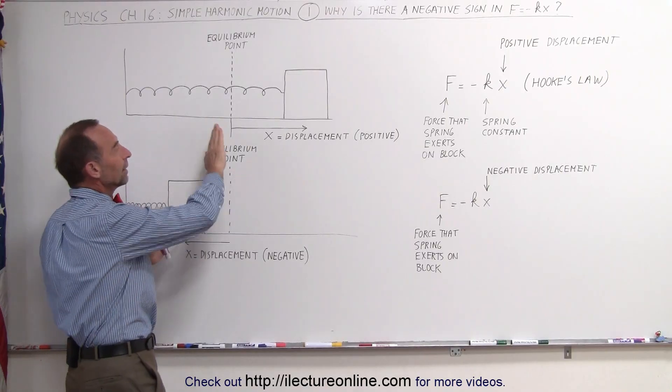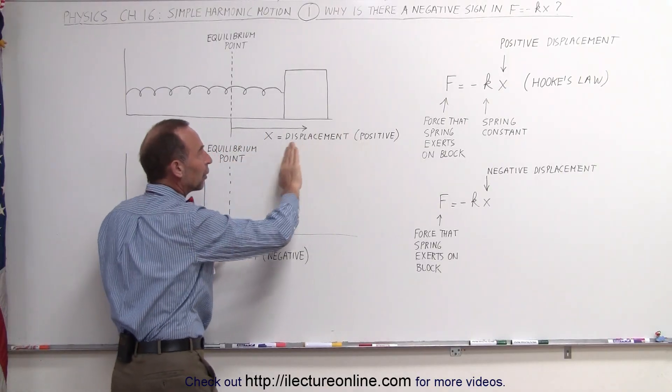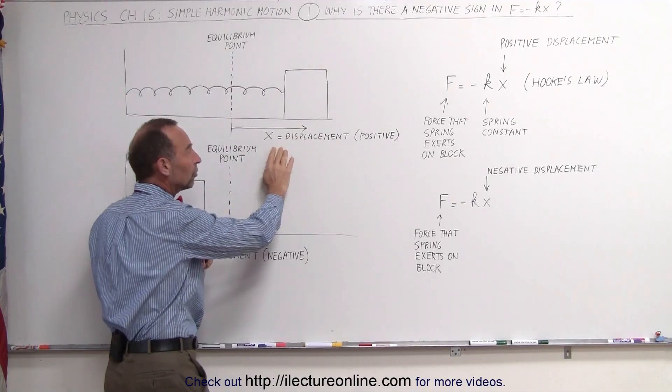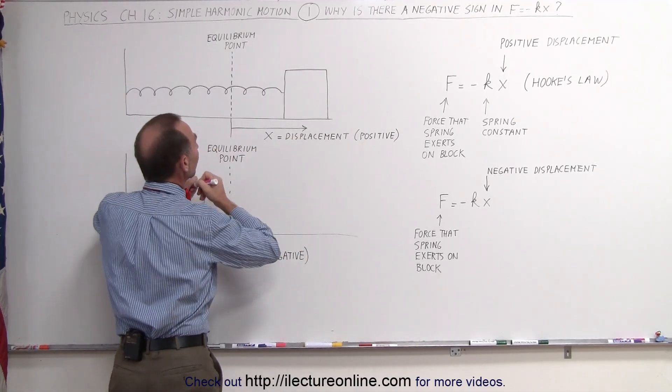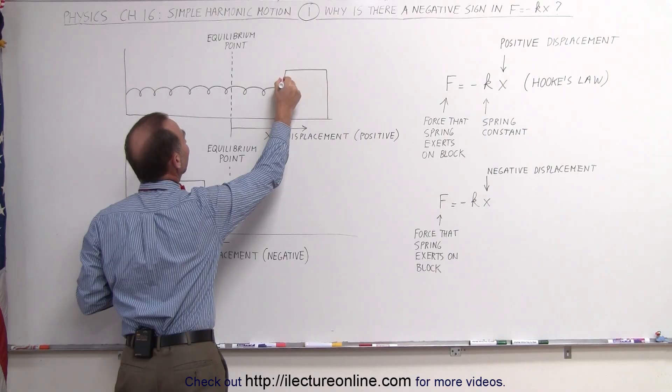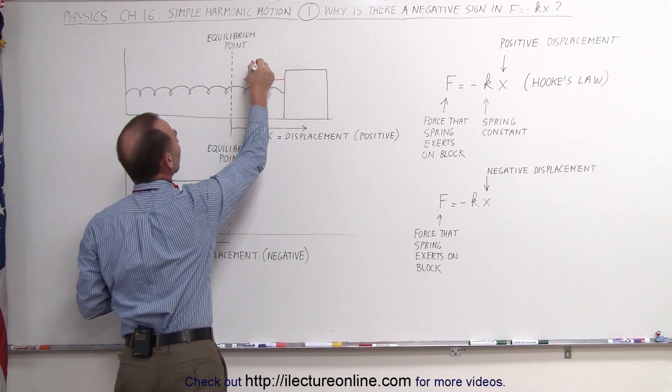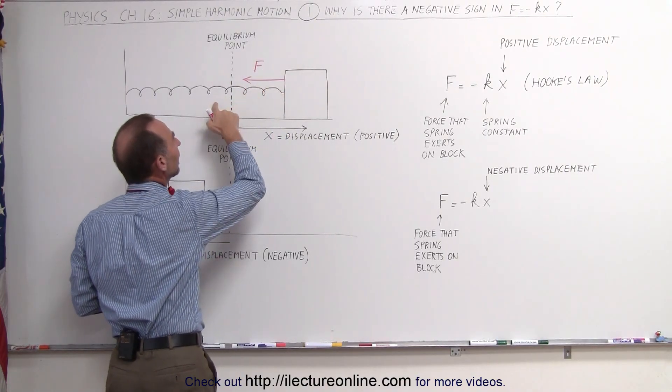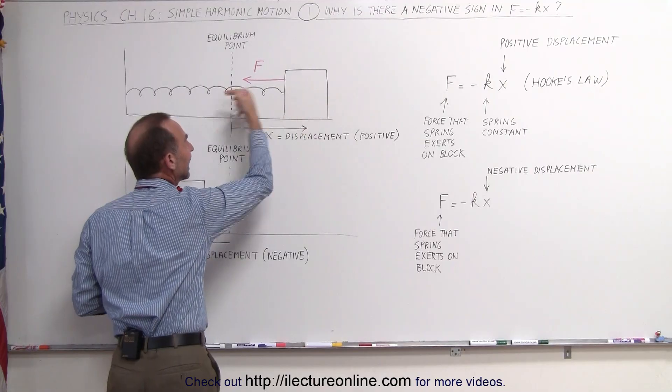So this entire time that the block is past the equilibrium point, to the right side, in other words when the displacement is a positive quantity, the spring will exert a force in the negative direction. So this is the force that the spring exerts on the block, and it's in the negative direction.